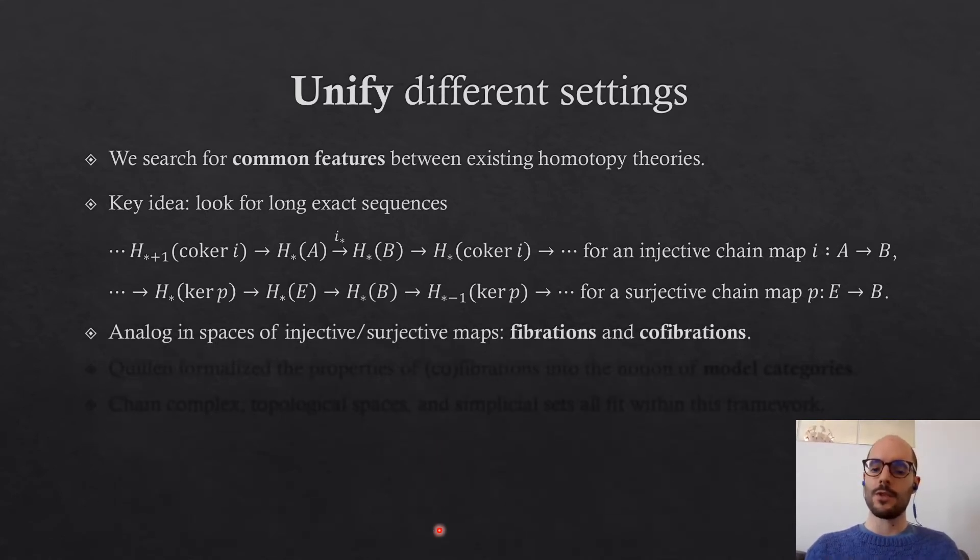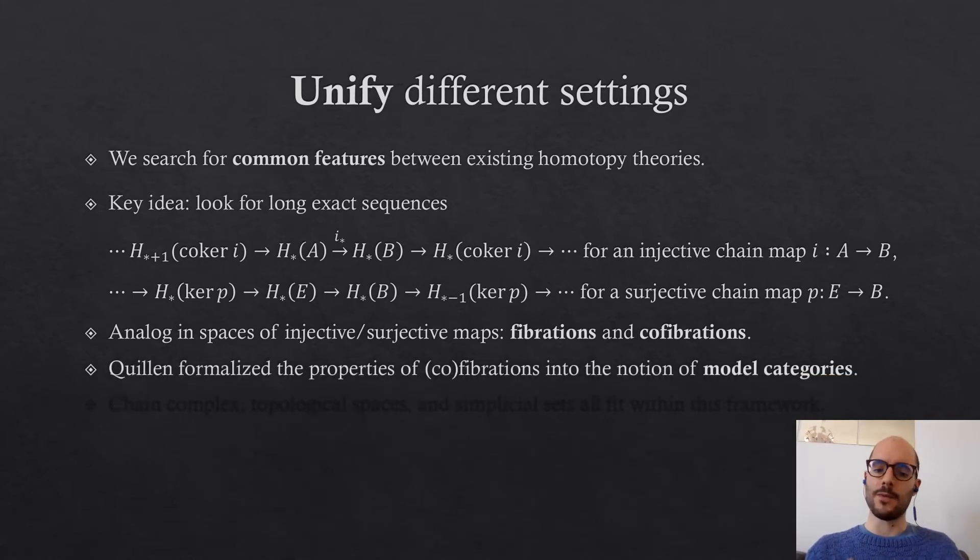In topological spaces, the analogous objects of injective and surjective maps are fibrations and cofibrations. These maps satisfy a bunch of properties, which were formalized by Quillen into the notion of model categories. A model category is a category with extra structure: the choice of fibrations, cofibrations, and weak equivalences, which are the objects we want to identify. He managed to extract the core content of what it means to have a homotopy theory which behaves well with respect to fibrations and cofibrations.